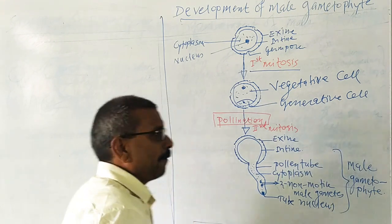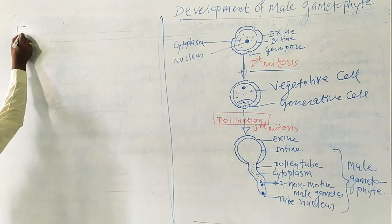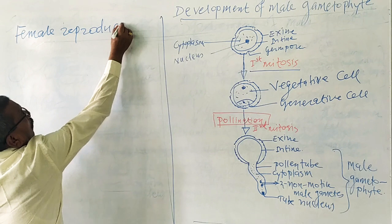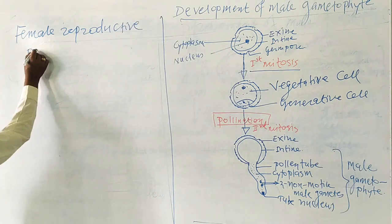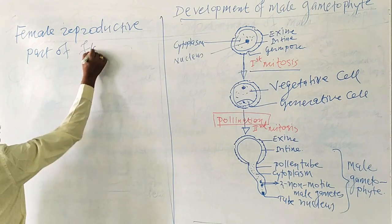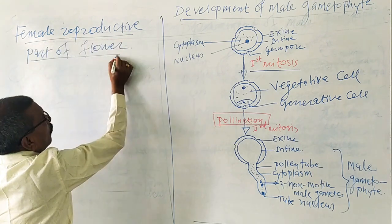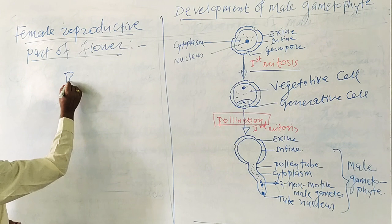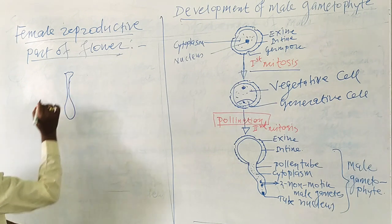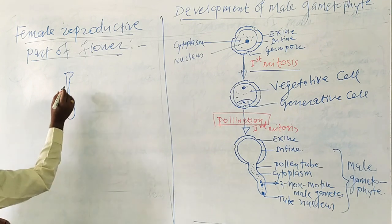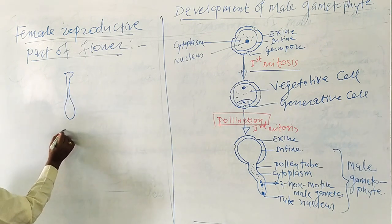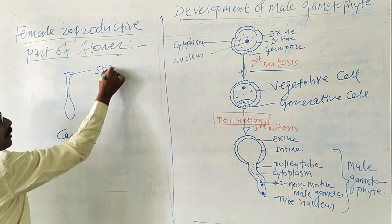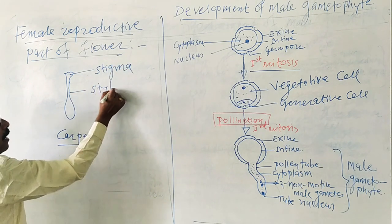The female reproductive part of the flower is the gynoecium. The unit of the gynoecium is a carpel. Each carpel consists of three parts: the stigma, the style, and the ovary.